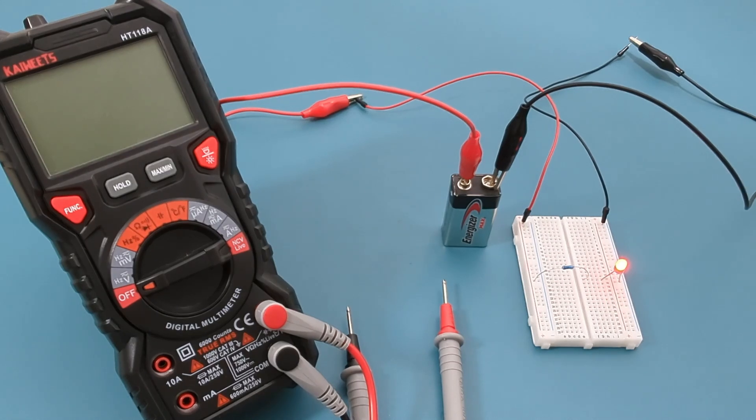As the current passes through the LED, it experiences another voltage drop of 2 volts. This drop happens because the LED, like the resistor, has internal resistance. The electric potential decreases further as the LED converts some of it into light energy.